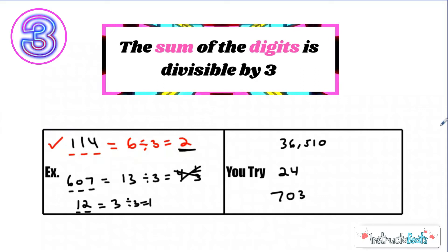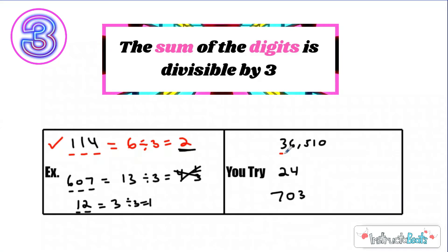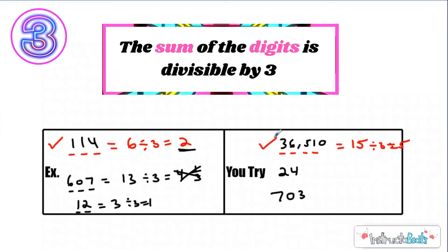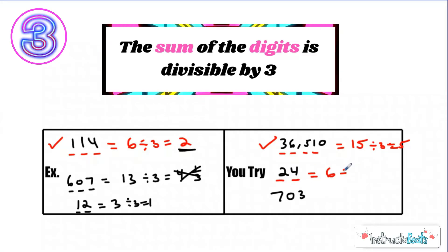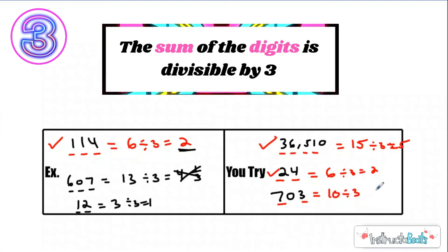Now try these: 36,510 and 24,703. Go ahead and pause the video, use our rule, then push play to check your work. For 36,510: 3 plus 6 is 9, plus 5 is 14, plus 1 is 15 — and 15 is divisible by 3, so yes. For 24: 2 plus 4 equals 6, and 6 divided by 3 is 2, so yes. For 703: the digits add up to 10, and 10 divided by 3 gives 3 with a remainder of 1, so 703 is not divisible by 3.